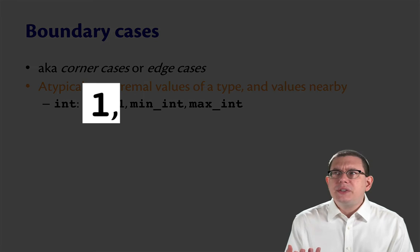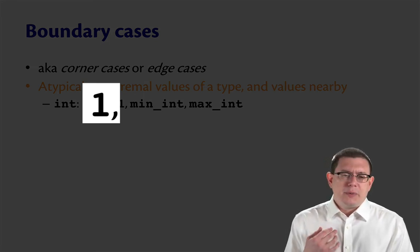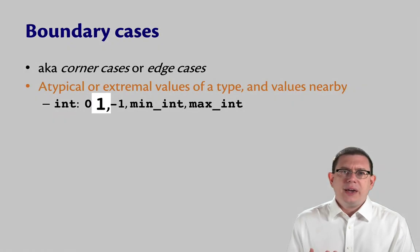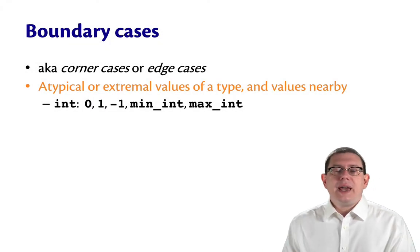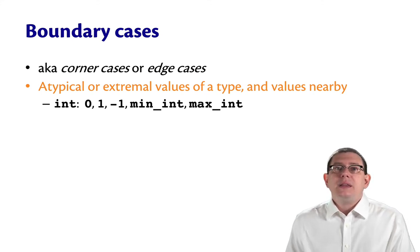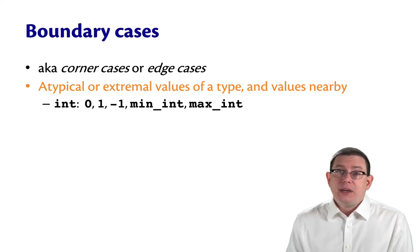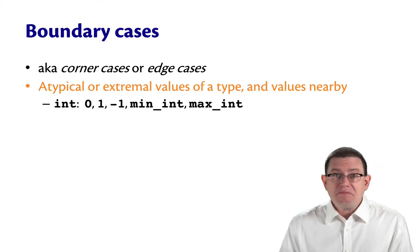Now right away you'll notice 1's a small integer too, so isn't this both a boundary case and a typical case? Yes. I'm not trying to say that these three different kinds of black box tests are orthogonal. They're not. These are just good ways of generating good black box tests, and you may end up with some that fall out of multiple categories. That's fine.